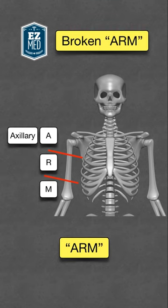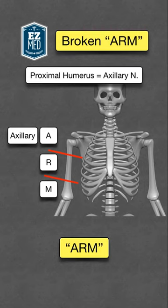A stands for axillary nerve. This will help you remember that a fracture involving the proximal humerus, including the head of the humerus or surgical neck, can lead to an axillary nerve injury.